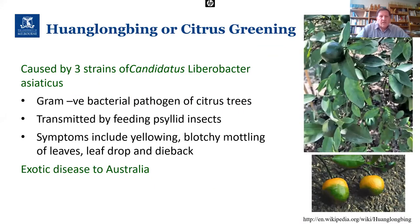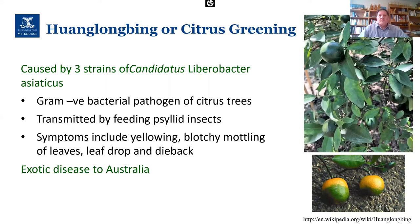Huanglongbing, or citrus greening, is very important to our citrus industry. Huanglongbing means 'yellow dragon sickness.' It was first identified in China, and then spread through Europe and America. It's caused by three strains of Candidatus Liberibacter, and is transmitted by feeding psyllid insects, which pass the bacteria into the phloem. Symptoms include yellow blotchy mottling of leaves, leaf drop, and dieback. This is exotic to Australia, and it's very difficult to control — there's a lot of work going on around the world to try to find adequate resistance.